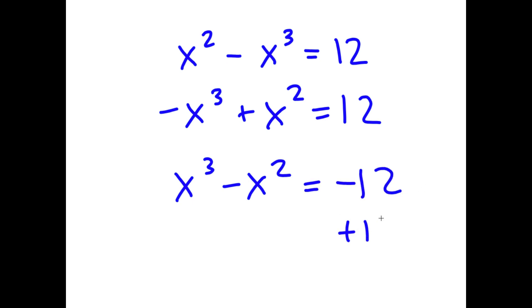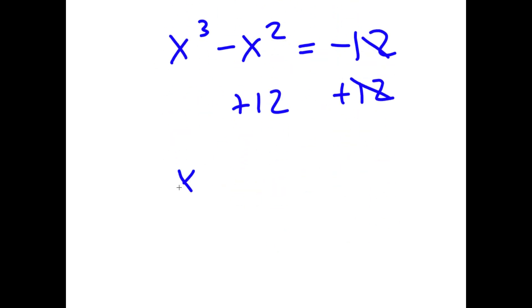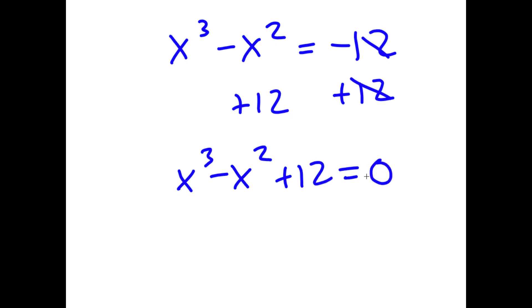Now I can add 12 on both sides, so I get x cubed minus x squared plus 12 is equal to 0.